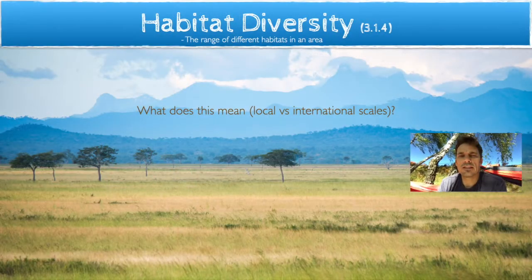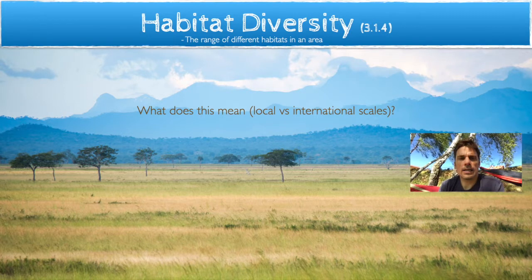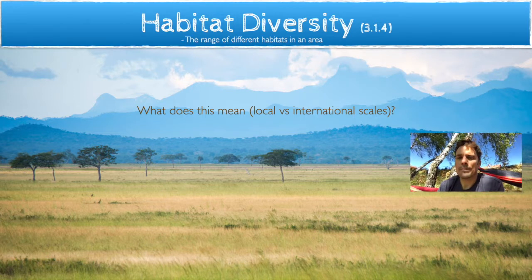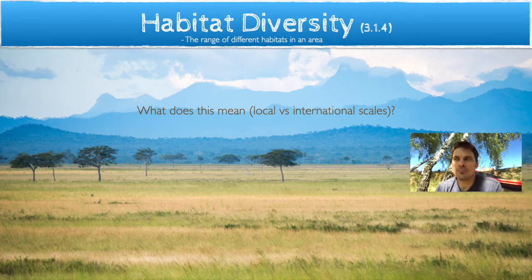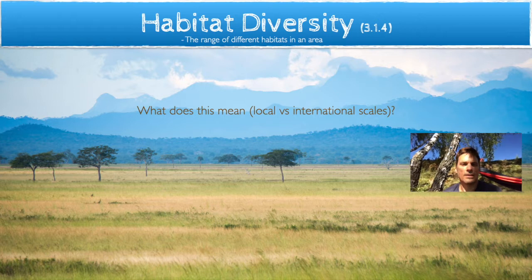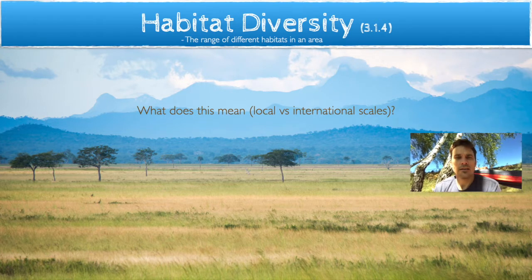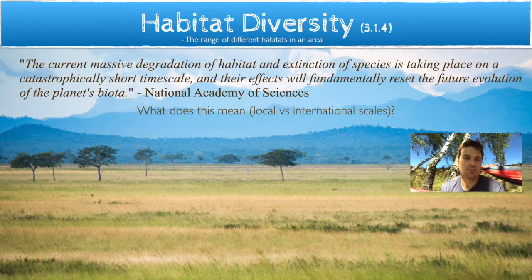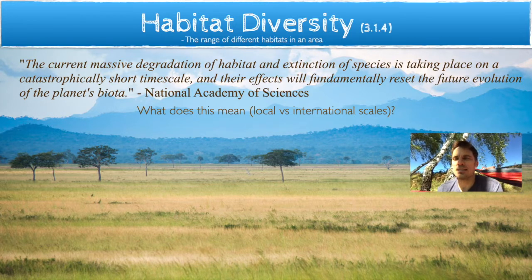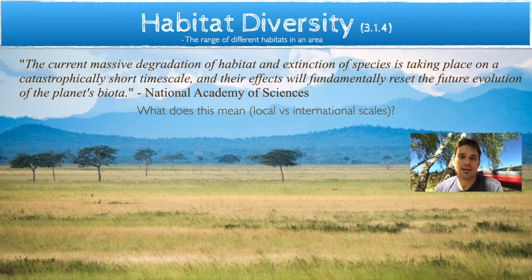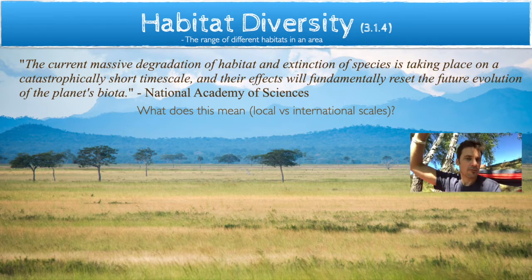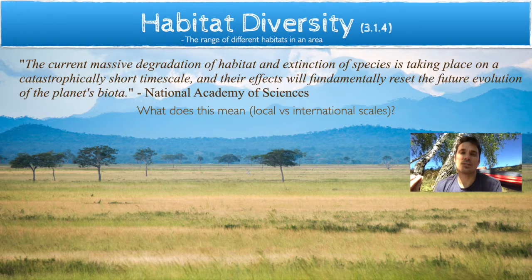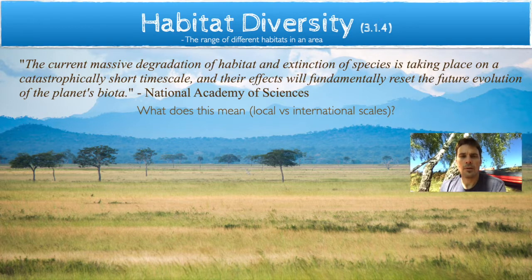The third type of diversity is habitat diversity — the different types of habitats in a given area. This picture from Mikumi, Tanzania is a nice example: you can see a grassland, a woodland, some montane forest up above, and maybe some riverine valleys. There's an important quote here exploring the idea that we're threatening the future evolution of plants by reducing habitats, which matters because plants are the food source for everything above them in the food chain, as well as habitat for many insects.